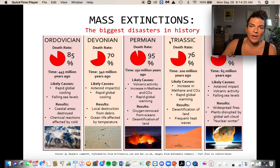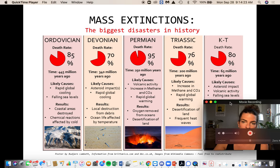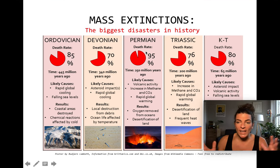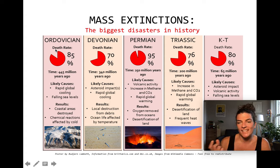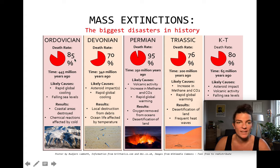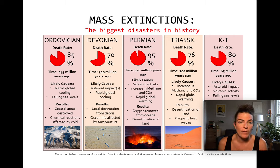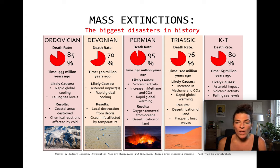The Permian extinction — the most catastrophic mass extinction in Earth's history — about 250 million years ago wiped out 95% of all species on Earth. Prior to that, the Ordovician — the first mass extinction, about 450 million years ago after the Cambrian Explosion — resulted in about 85% of species going extinct in a very short period of time, probably caused by rapid global cooling and falling sea levels. Coastal areas were absolutely decimated of species, and many of the chemical reactions were affected by this extreme cold event.